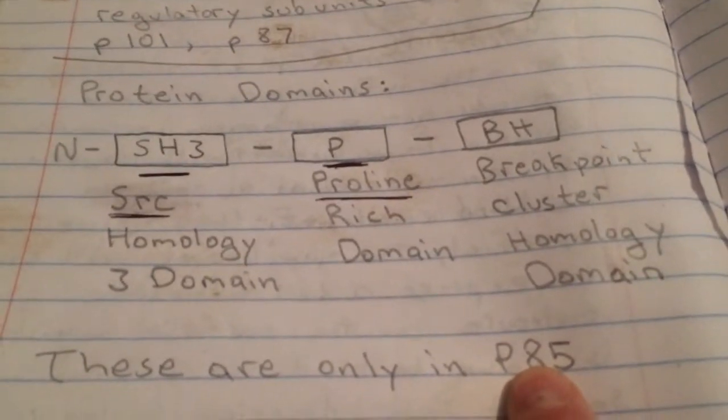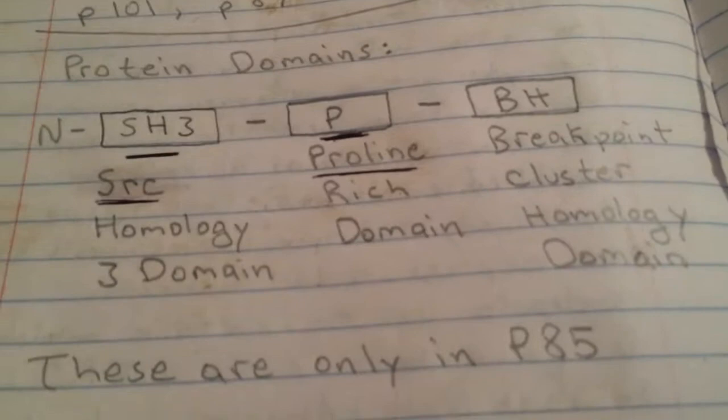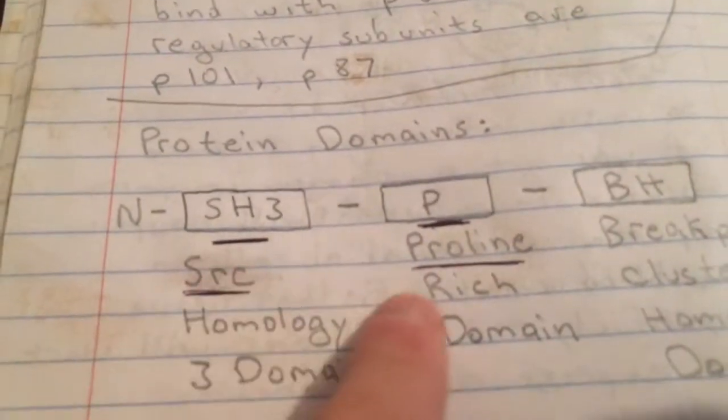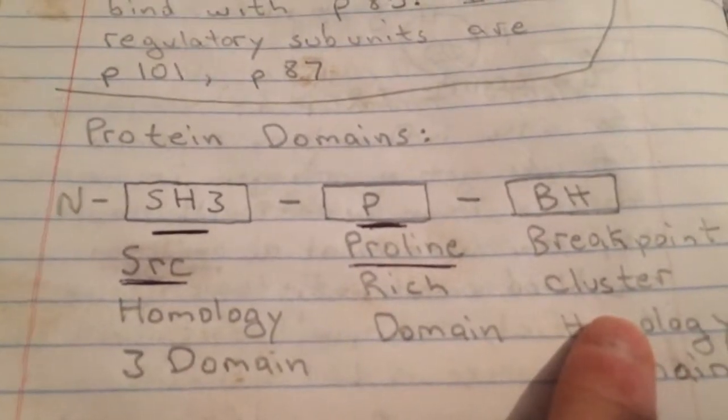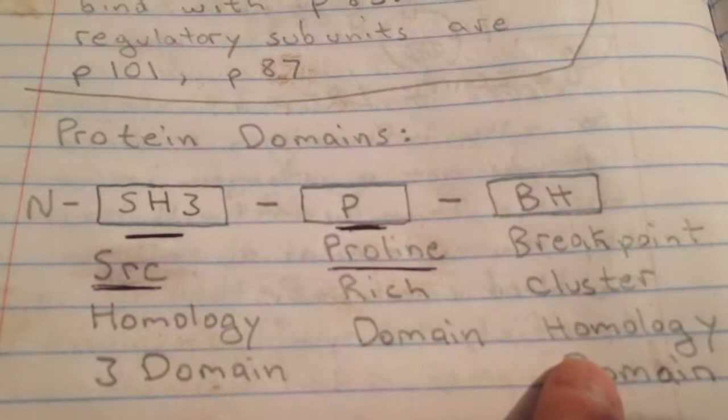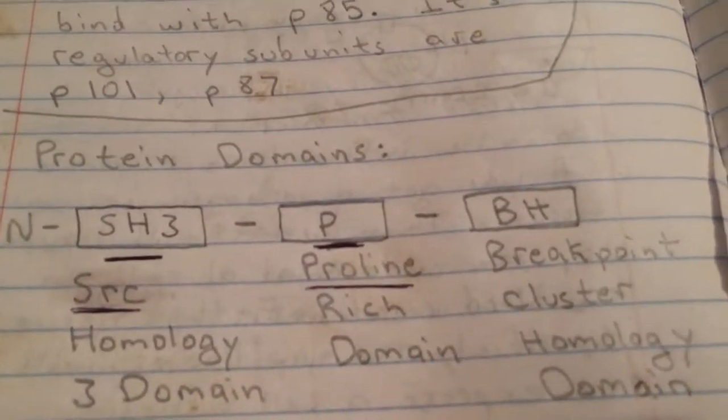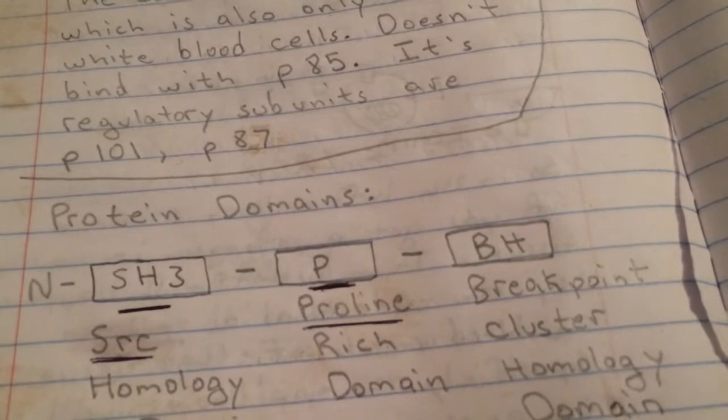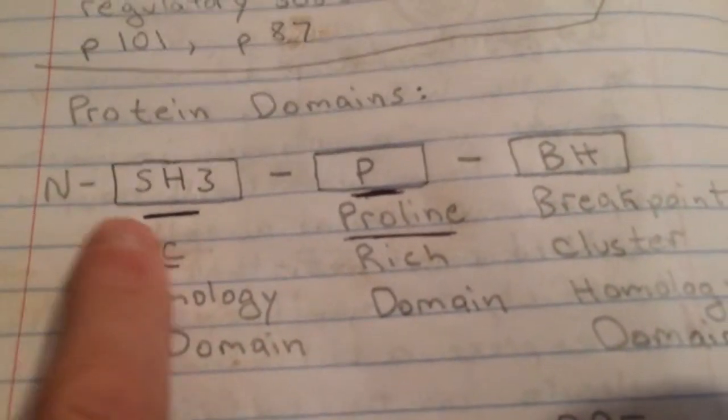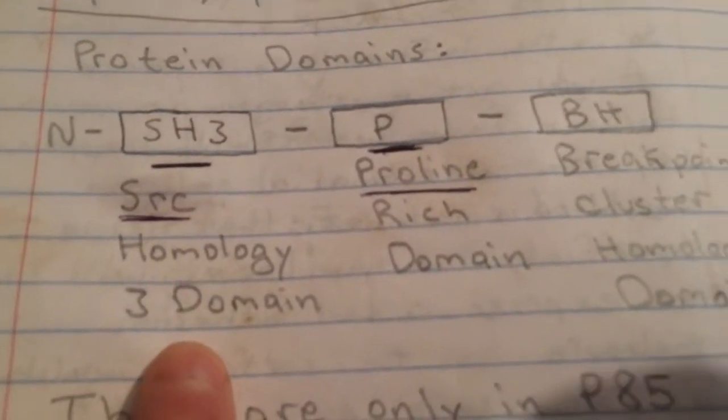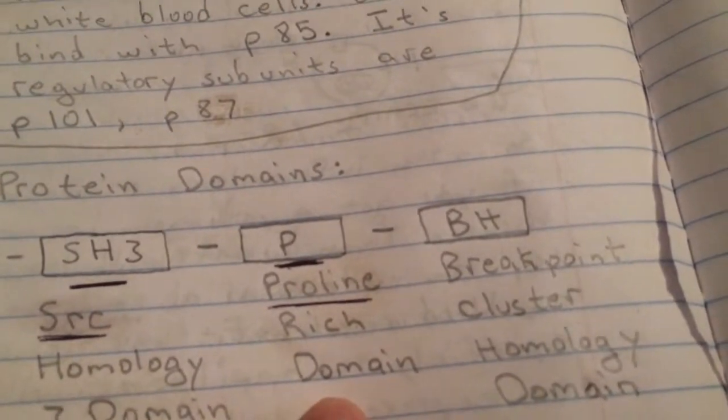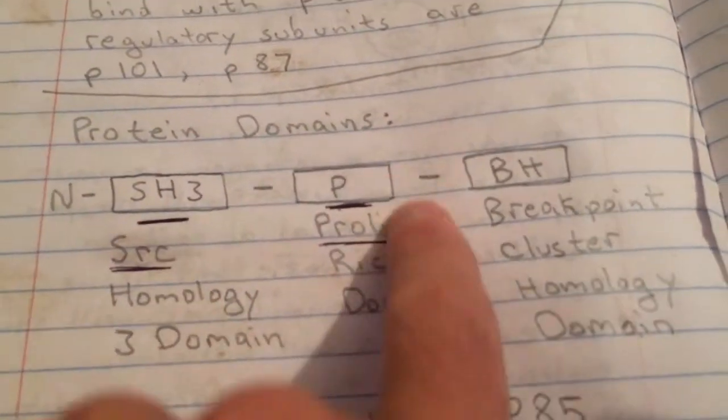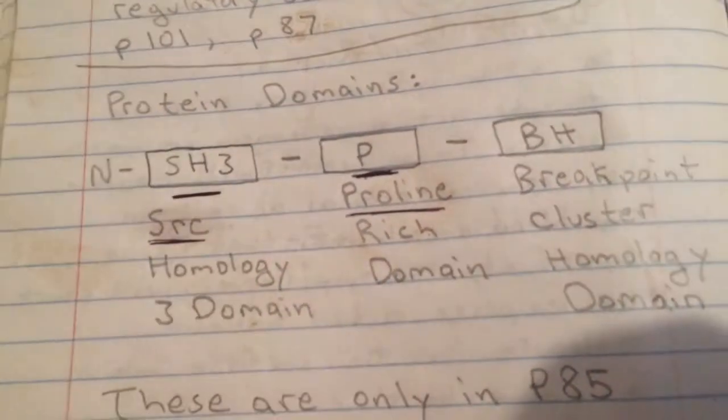And right here, there again there's the regulatory portion which is P85, which we have right here. That's the regulatory portion of the PI3 kinase enzyme. It regulates it so it just doesn't go off and start activating that pathway wherever it feels like. But these are the protein domains of it and I underline certain ones for specific reasons because I want to try to make sense of the protein domains and look for patterns.